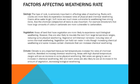The rate of weathering can be influenced by several factors. Firstly, geology — the type of rock is extremely important. Rocks with cracks are more likely to experience increased rates of physical and chemical weathering, because the cracks allow water to get in. Soft rocks are much more vulnerable than strong rocks. The chemical composition is equally important — limestones with large amounts of calcium carbonate are far more vulnerable to carbonation. Regarding vegetation, areas with vegetation are more likely to experience rapid biological weathering. However, vegetation can also insulate rock from large temperature changes, reducing some physical weathering, and can intercept rainwater, reducing some chemical weathering.